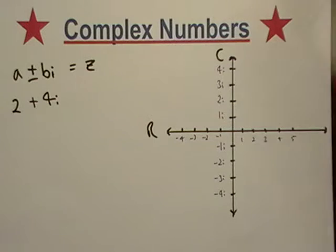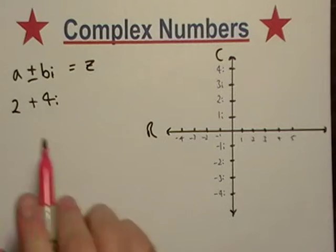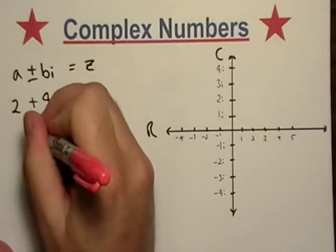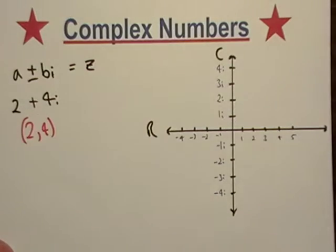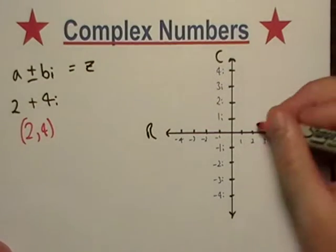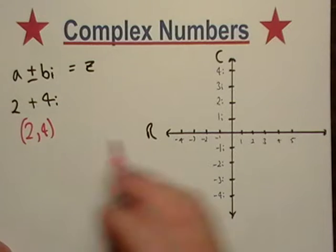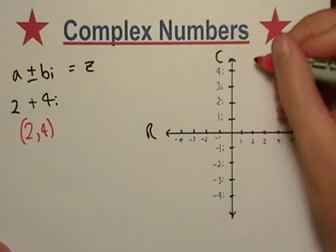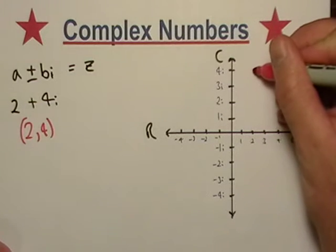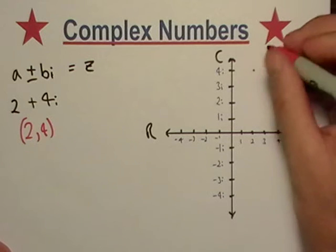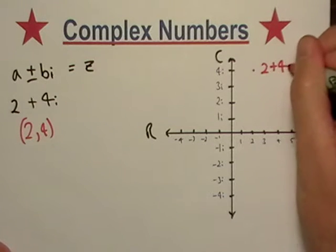So if we go and we want to graph this number, this complex number right here, 2 plus 4i, it's almost like 2 comma 4 in the regular coordinate plane. So what I would do for 2 plus 4i is I would go over to 2, and then I'd go up to 4i.